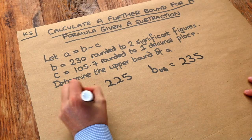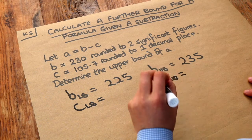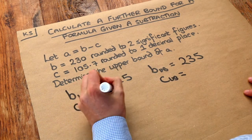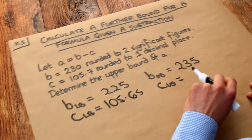What about C, the lower bound and the upper bound? Well the lower bound is going to be 105.65 and when you're rounding to decimal places the quick way to do it for the lower bound and upper bound is to reduce the last digit by 1 so the 7 becomes 6 and stick a 5 on the end.